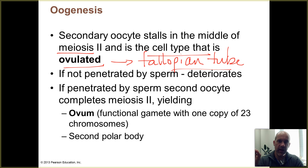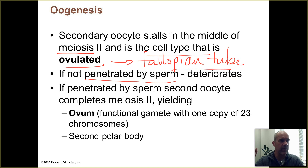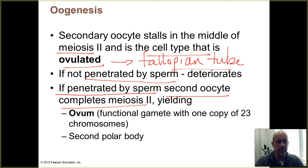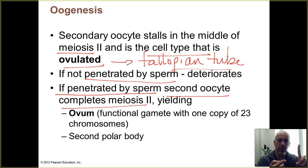The secondary oocyte travels down the fallopian tube. If there is no fertilization, it decays fairly quickly and is not viable for very long after ovulation. If it does get penetrated by a sperm cell, the secondary oocyte completes meiosis 2. The sperm cell is much smaller than the secondary oocyte. When a sperm cell enters with its DNA — a set of 23 chromosomes — the secondary oocyte completes meiosis 2 and its 23 duplicated chromosomes separate.